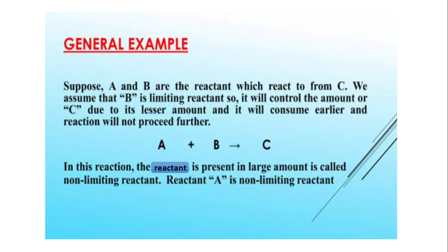Is topic ko pardhne se pehle stoichiometric amounts ka concept clear karna hai — stoichiometric amounts woh hoti hain jo balanced chemical equation mein li jaati hain. Lekin yahan limiting reactant discuss karte huay jo bhi example lenge, woh balanced chemical equation nahi hogi. Limiting reactant product ki amount ko control karta hai apni kam miktar ki wajah se, jaldi consume hota hai, aur reaction further proceed nahi kar sakta. Jo baqi rehne wala reactant hai, woh excess reagent ya non-limiting reactant hai.